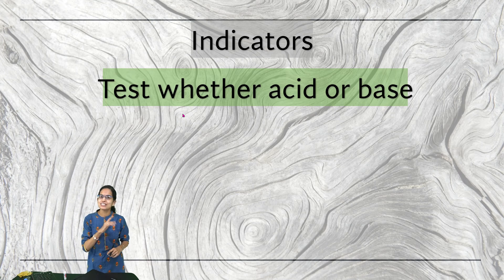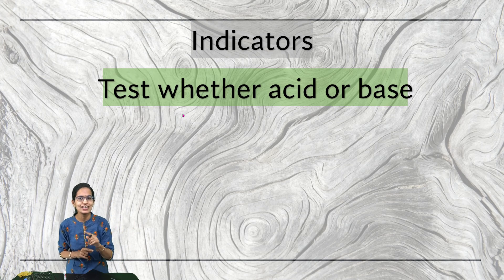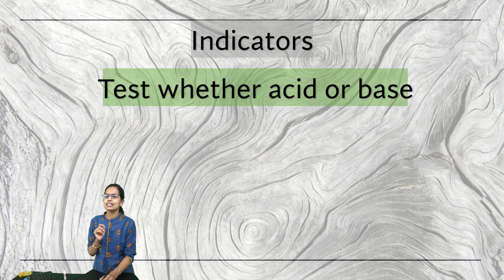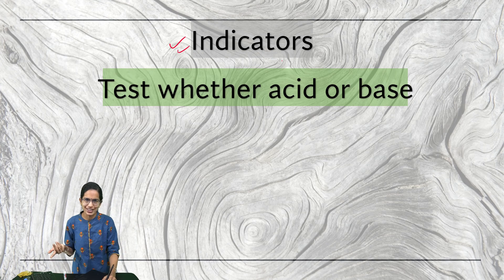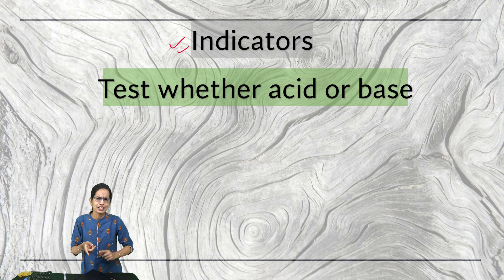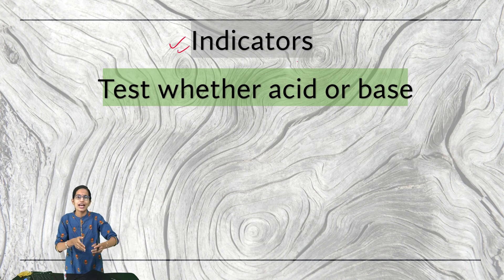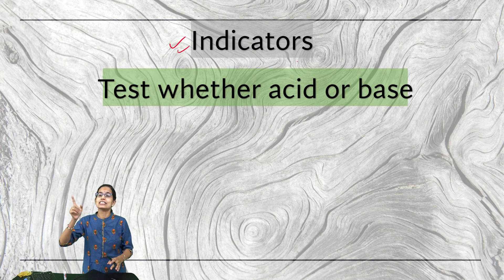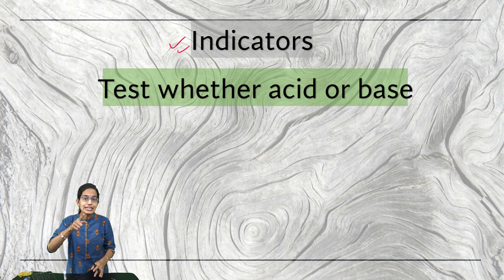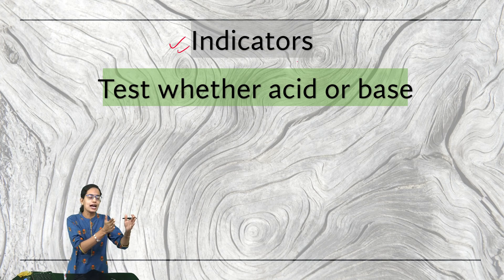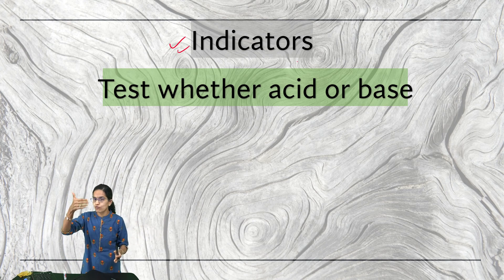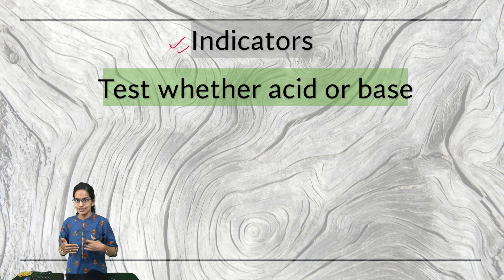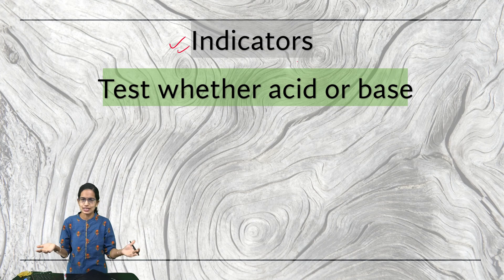How do I identify whether a solution is acidic or basic in nature? The very simple way is with the use of indicators. Just as indicators on the road tell you whether to take a right or left turn, indicators in chemistry help us understand what a solution actually pertains to — whether it is acidic or basic in nature.